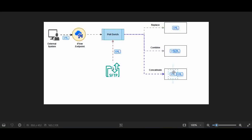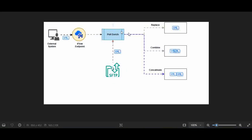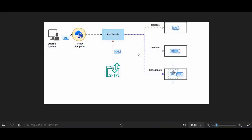The external system sends you a payload, and using that payload you additionally fetch some detail from the SFTP adapter using Poll Enrich. Poll Enrich has three options: whether you want to replace the old payload with the new content fetched from the SFTP server, combine them together, or concatenate them together. We will see all of these in the iflow session in BTP.